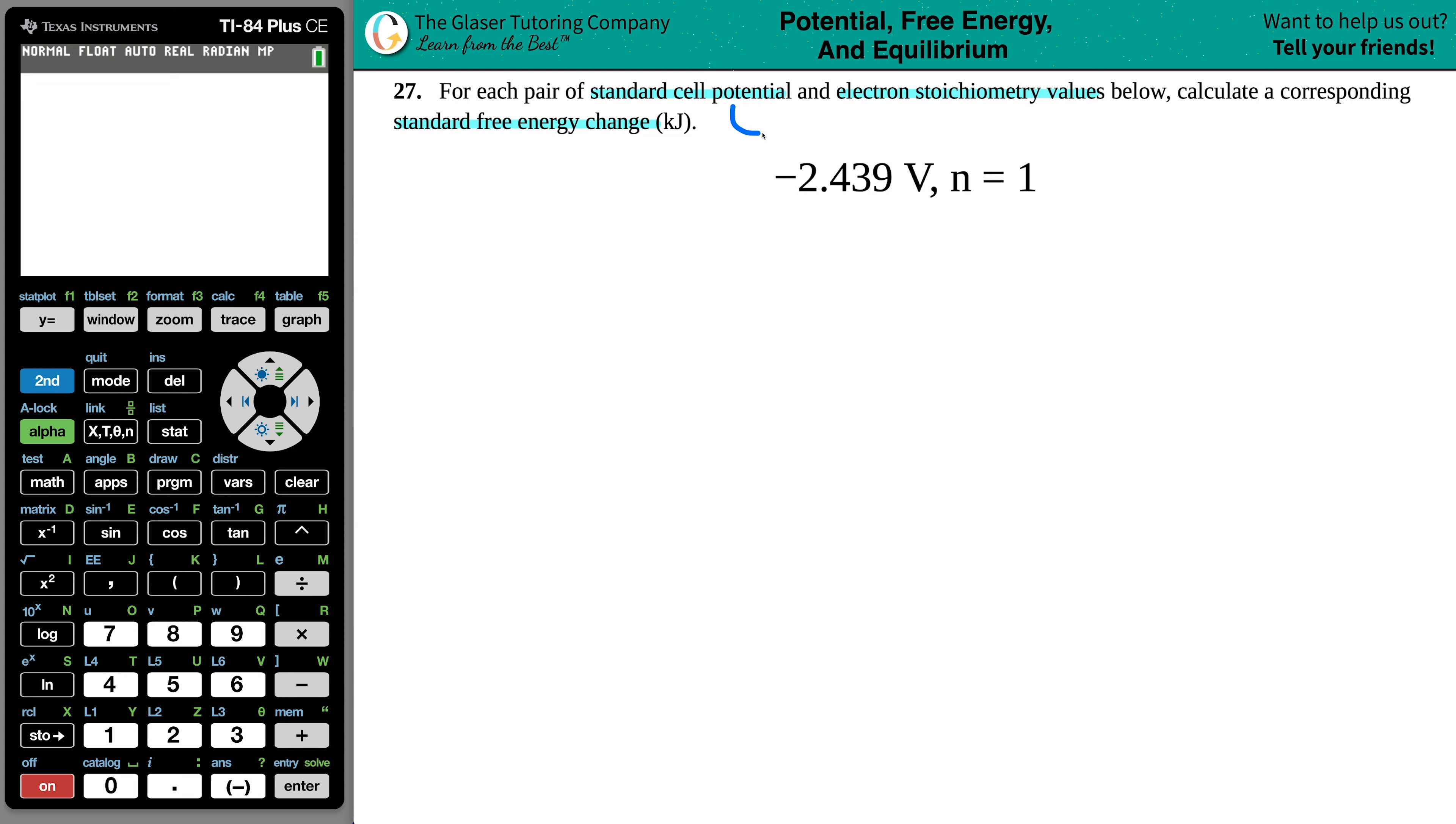Remember, a cell potential is always an E cell value. And specifically, since they're talking about standard values, we know that we have an E notch cell. That little degree sign in the upper right-hand corner just means that we're in standard conditions. And an E cell value always has units of volts. So this value has to be the E cell value, which means that the other one has to be the electron stoichiometry value.